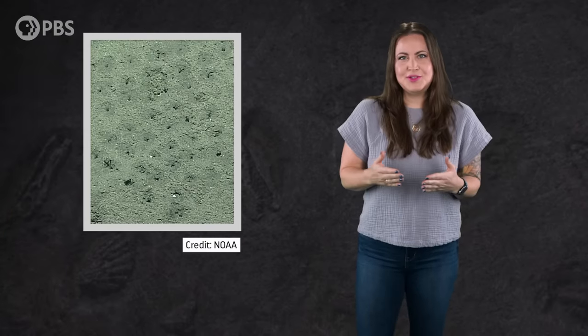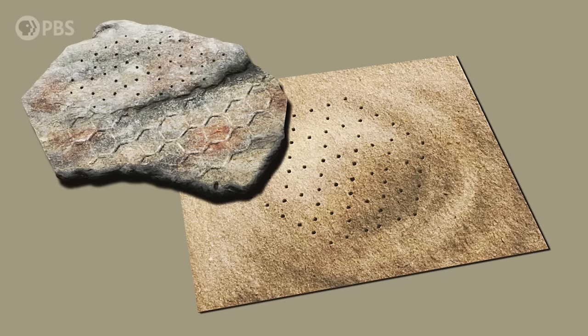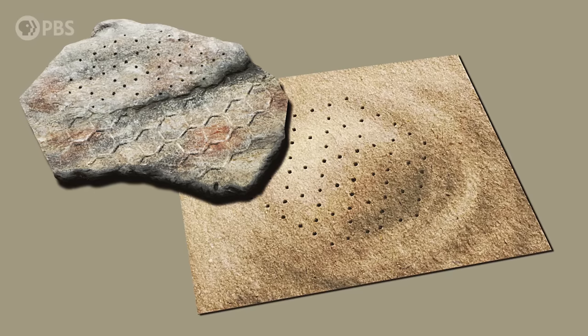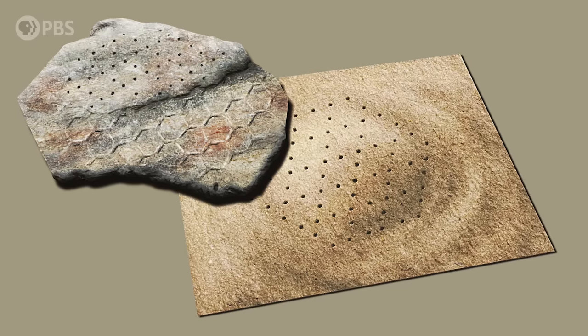The research team initially described them as an invertebrate of uncertain identity. And it wasn't for another few years that the hexagon spacing of the holes was connected to the hexagon fossil paleodictyon. That link was eventually confirmed with the help of an innovative piece of scientific equipment. A squirt gun.